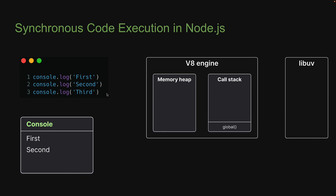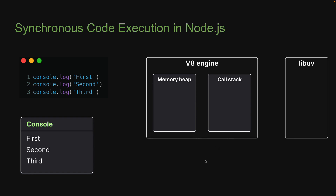Finally, execution is on line three at three milliseconds. The function is pushed onto the stack, 'Third' is logged to the console, and the function is popped off the stack. There is no more code to execute and global is also popped off. This is pretty much how synchronous code execution can be visualized with the Node runtime.